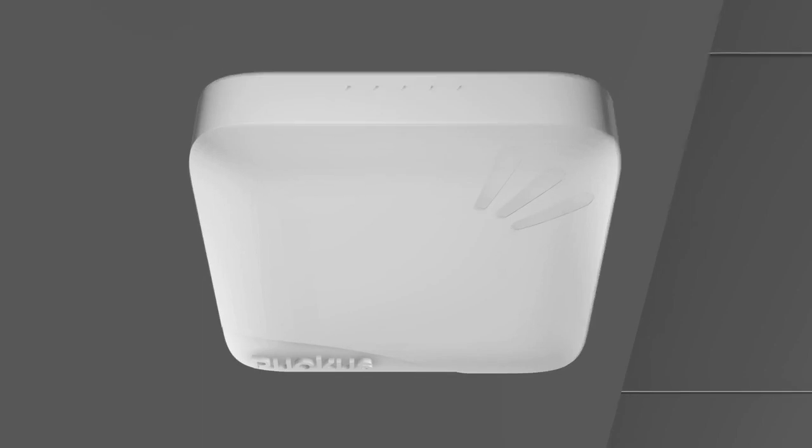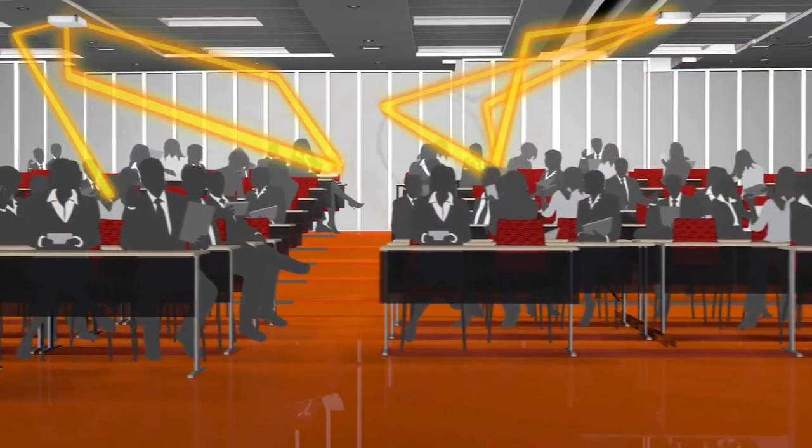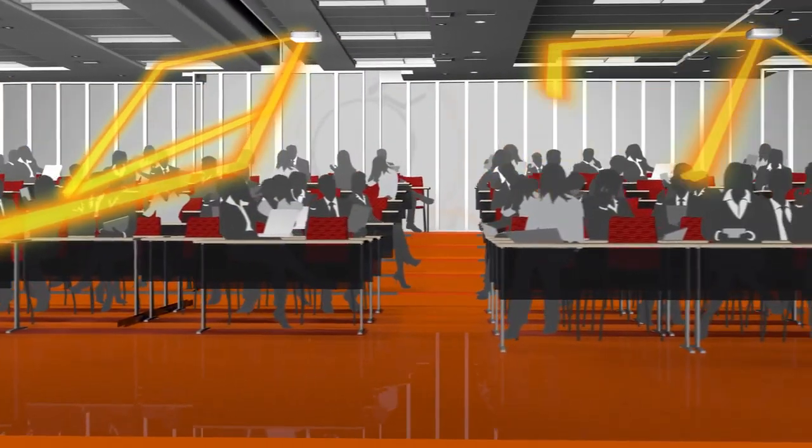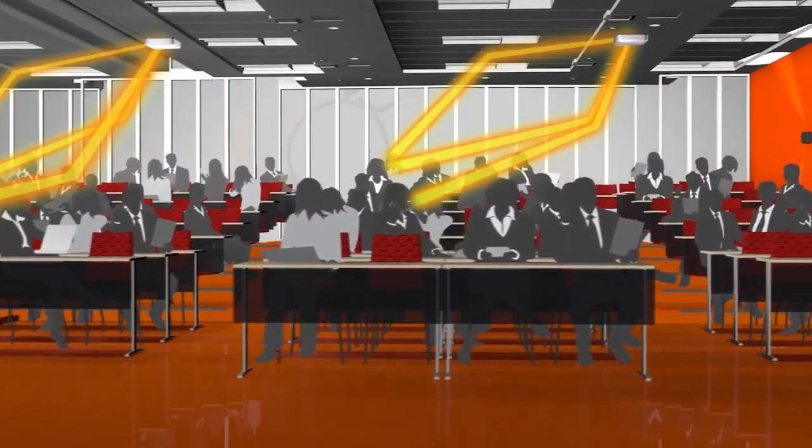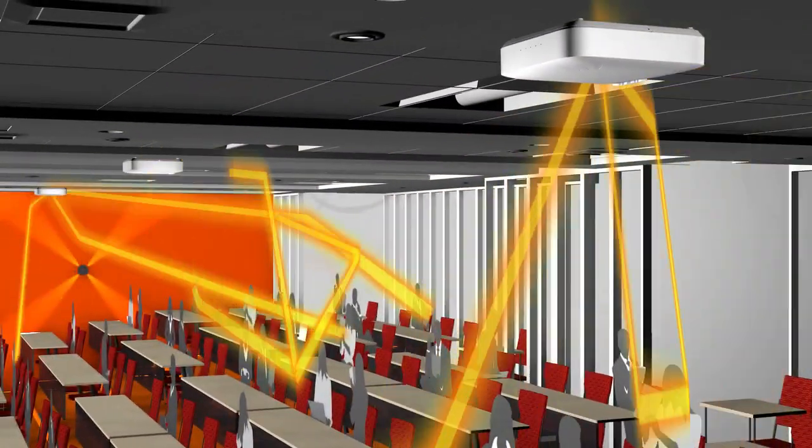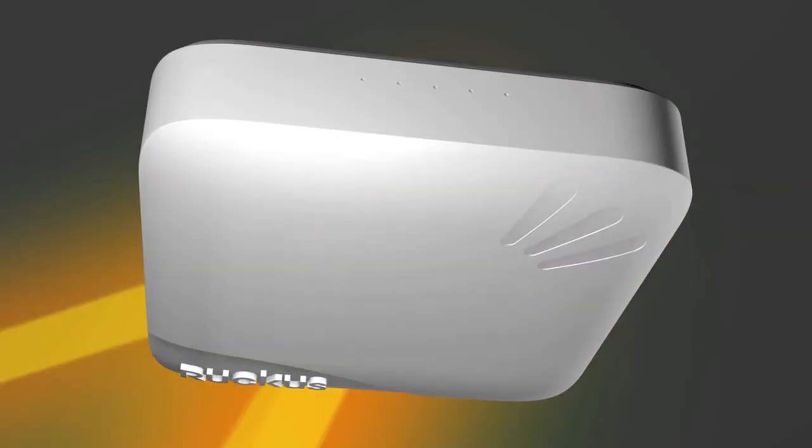Having complete control over communication between the access point and devices has additional technical benefits. To achieve the highest possible throughput, Wi-Fi standards make use of complex techniques like spatial multiplexing and multi-user MIMO. Maximizing these capabilities requires complete control of the signal instead of just blasting Wi-Fi energy in all directions and hoping for the best.